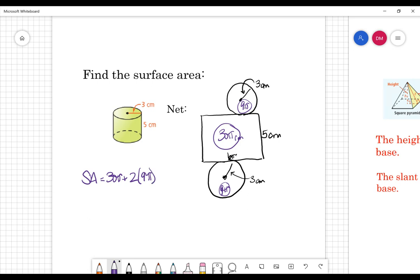Now this is essentially like adding like terms. So basically I'm taking 30 pi plus 18 pi. And in terms of pi, my surface area is 48 pi centimeters and we're talking about an area here. So 48 pi centimeters squared.